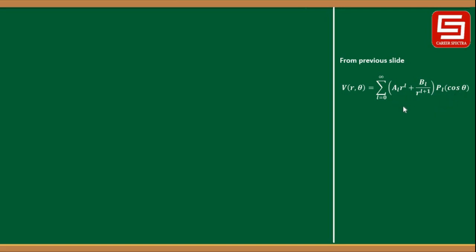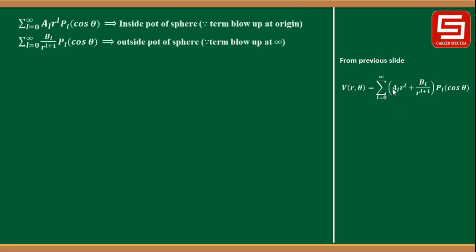Note that there are two terms in this expression. The first term is the summation over l=0 to ∞ of A_l r^l P_l(cosθ), which denotes the inside potential of a sphere. The second term is the summation over l=0 to ∞ of B_l / r^(l+1) P_l(cosθ), which denotes the outside potential of the sphere. To understand this, let us draw a sphere.